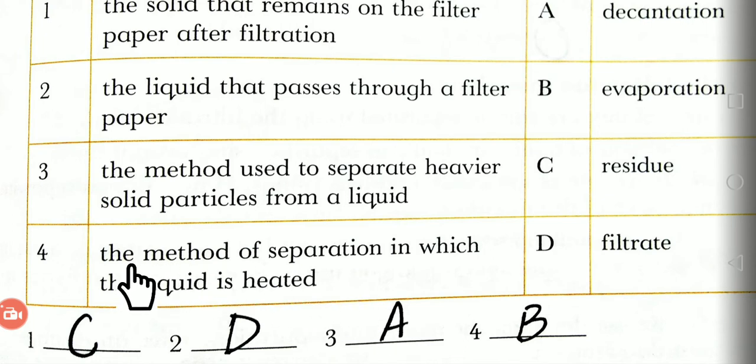Fourth statement: the method of separation in which the liquid is heated. Ki wo aleida karne ka kaun sa tarika hai, jismein maya ko, yani ke liquid ko heat di jati hai, garam kiya jata hai. That is B, theek hai. So you will write B in the fourth blank.